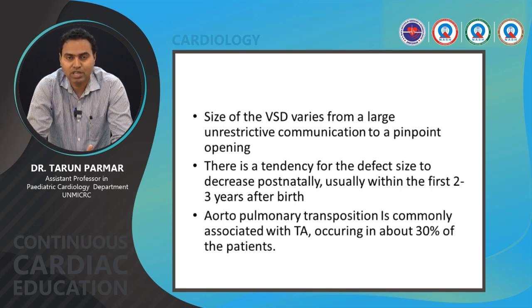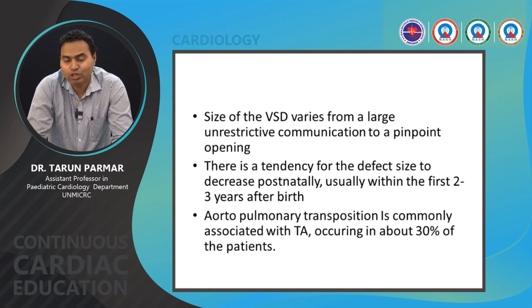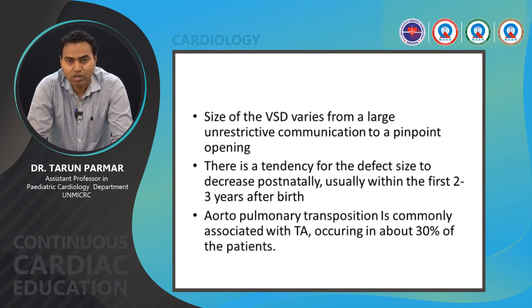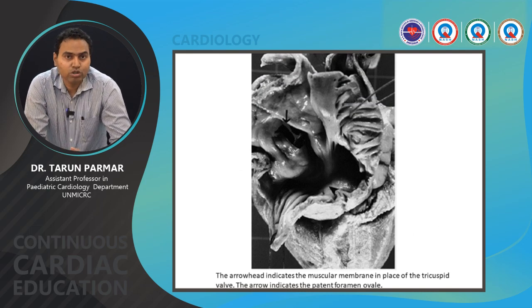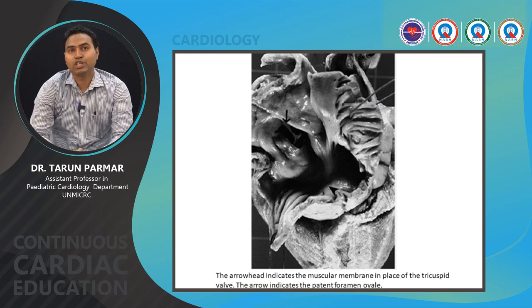There is a tendency for the VSD size to decrease after birth, usually within two to three years of life. There is an association of aortopulmonary transposition in the 1C and 2C situations, occurring in approximately 30% of patients.